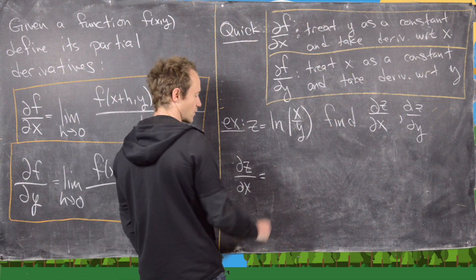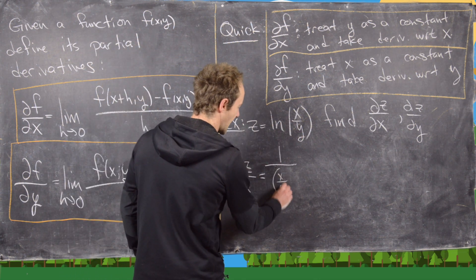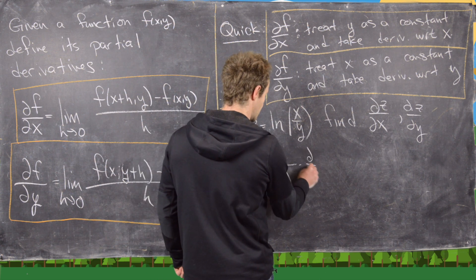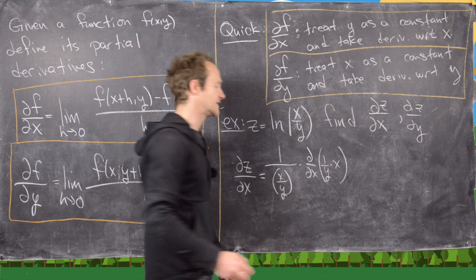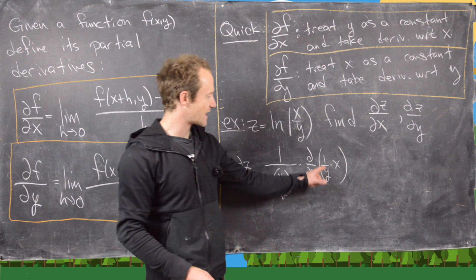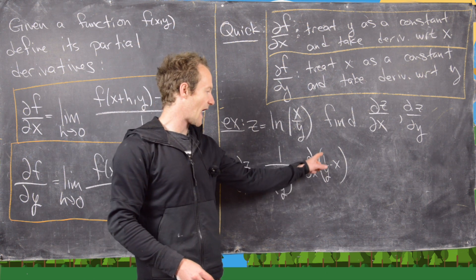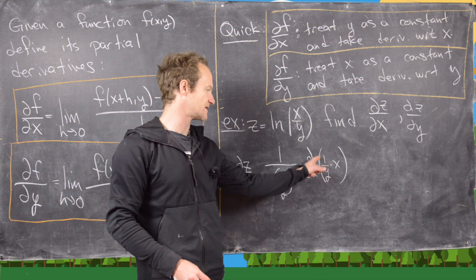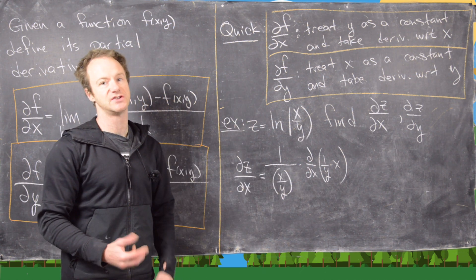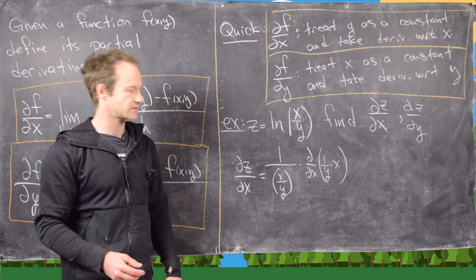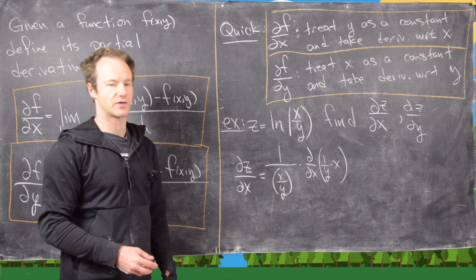Using the chain rule, we get 1 over whatever's inside the function — that's 1 over (x/y) — times the derivative with respect to x of the inside. I'll write x/y as (1/y) times x, thinking of 1/y as a constant coefficient of x. Just like the derivative of 2x is 2, or 3x is 3, the derivative of (1/y)x with respect to x is just 1/y.